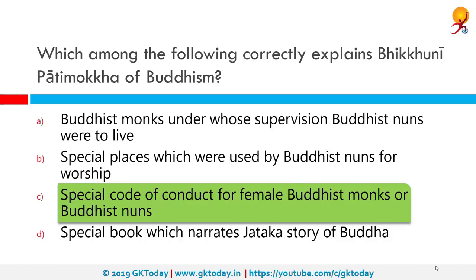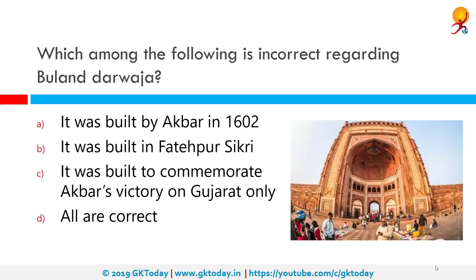Which among the following is incorrect regarding Buland Darwaza? All of the options are correct. Buland Darwaza, or the Gate of Victory, was built in 1601 AD by Mughal Emperor Akbar to commemorate his victory over Gujarat. It is the main entrance to the palace at Fatehpur Sikri, the highest gateway in the world, and an example of Mughal architecture.